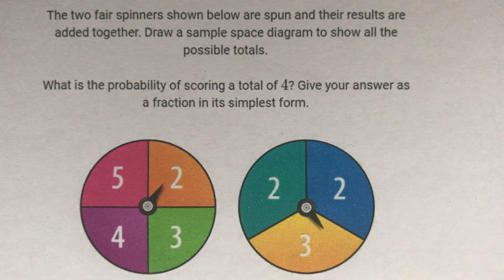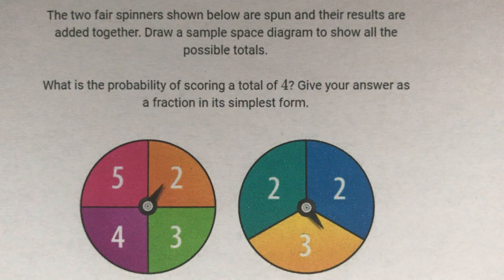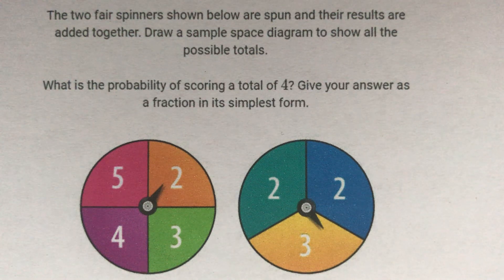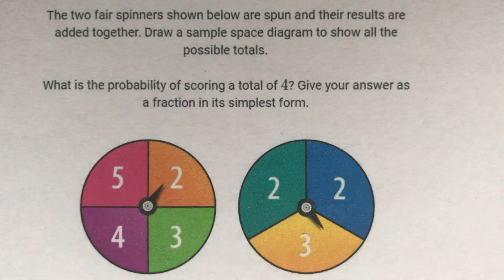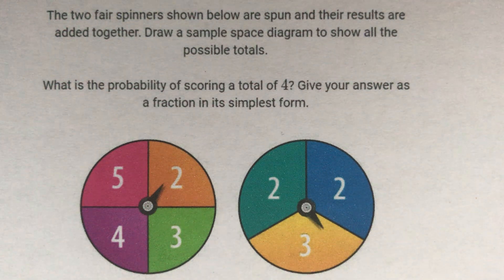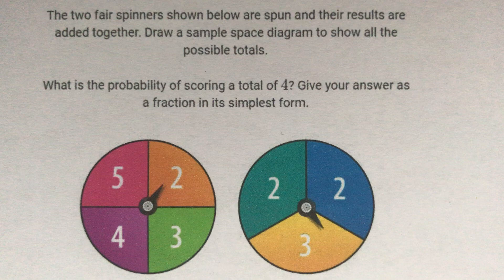In this question, we're told that the two fair spinners shown below are spun and their results are added together. We're asked to draw a sample space diagram to show all the possible totals. Then from that, we're asked to find the probability of scoring a total of 4 and giving our answer as a fraction in its simplest form.